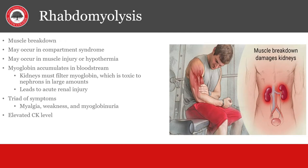Rhabdomyolysis occurs with major muscle injury or with hypothermia causing continuous shivering and thus muscle breakdown. When muscle breaks down from injury, it releases CK or creatine kinase. High levels of this in the blood can overwhelm the kidneys and lead to acute renal failure. Urine will look dark, brown, or red, but there will not be any blood present by urinalysis. The patient will complain of diffuse muscle pain, and treatment is IV fluids at a high rate continued until CK levels decrease. Severe cases, if untreated, can lead to death or permanent renal damage.